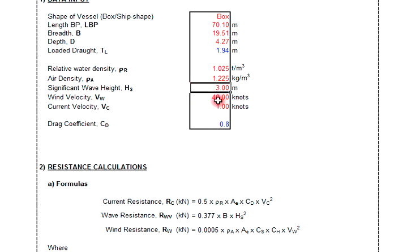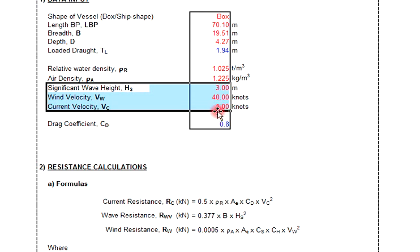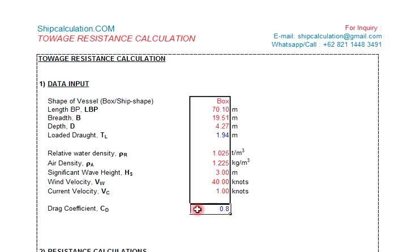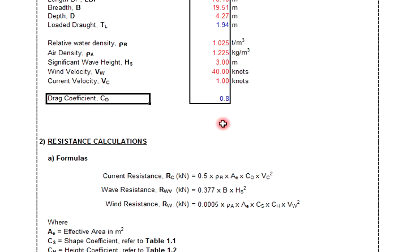The wind velocity is 40 knots and the current velocity is 1 knot. These three items — wave height, wind velocity, and current velocity — depend on the environmental load, based on where the phasor will be towed. The drag coefficient is 0.8, as specified inside the rules.